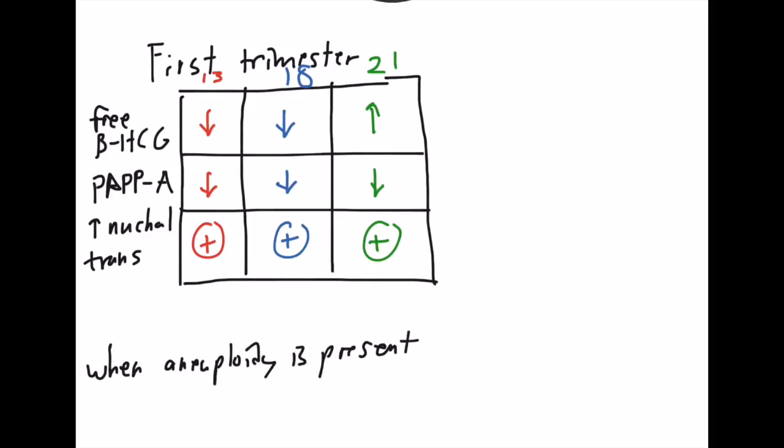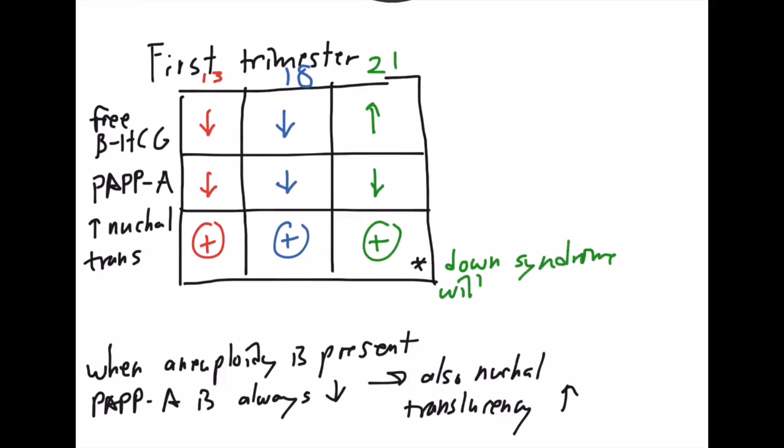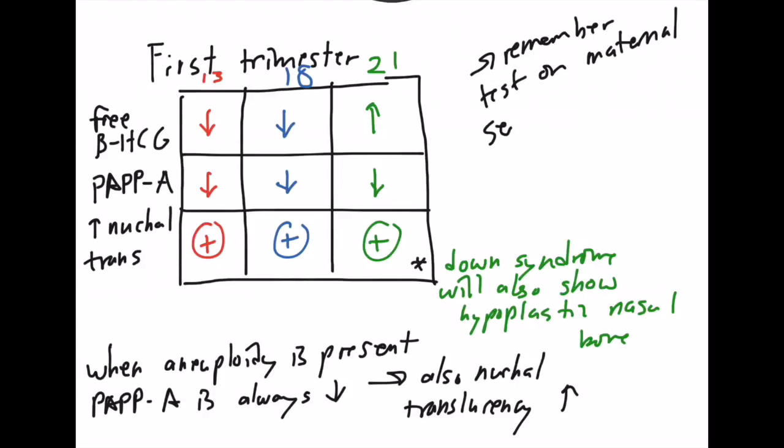A few common themes: when aneuploidy is present, this PAPPA is always down. Also, nuchal translucency is always present or typically present. These are general markers for aneuploidy or some genetic abnormalities. In Down syndrome, you're also going to have something called a hypoplastic nasal bridge that you can see when doing the ultrasound. Remember that Down syndrome has that opposite beta HCG. Everything else will look the same, but that's one way you can tell.